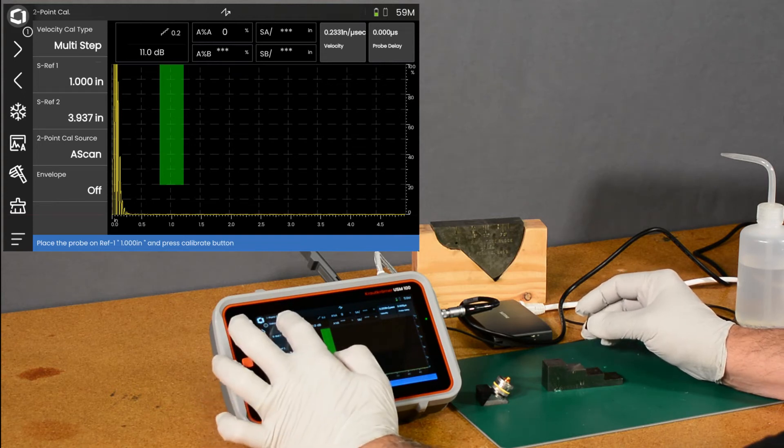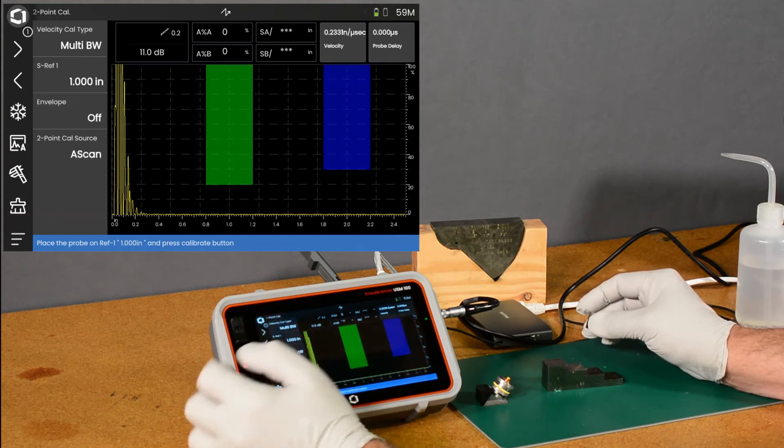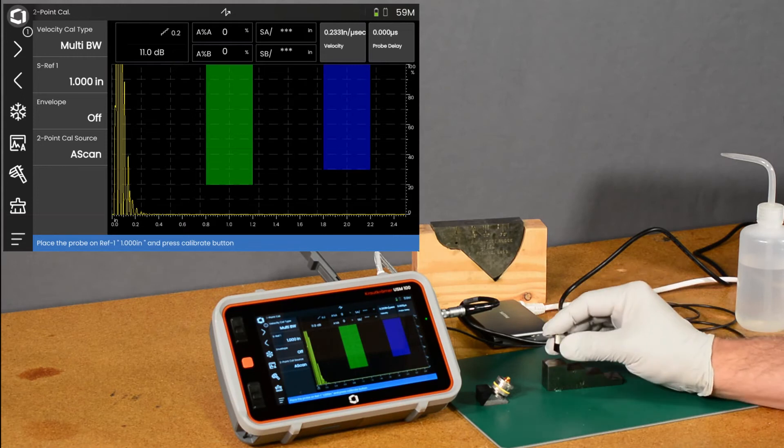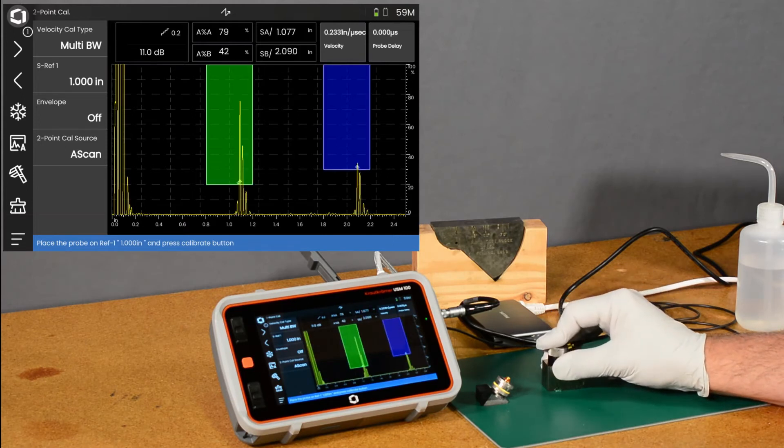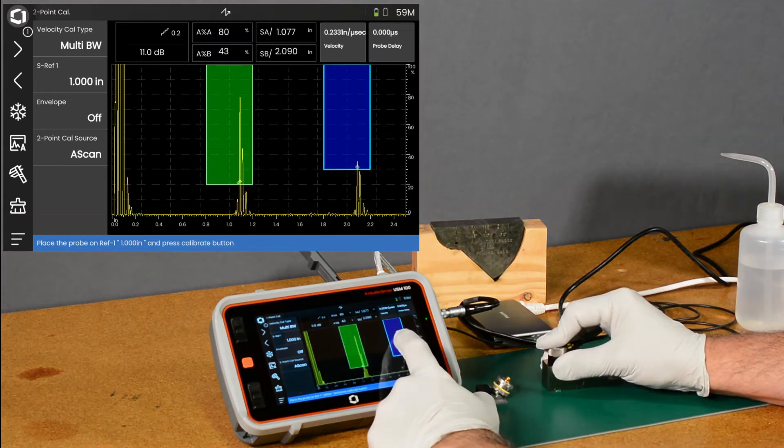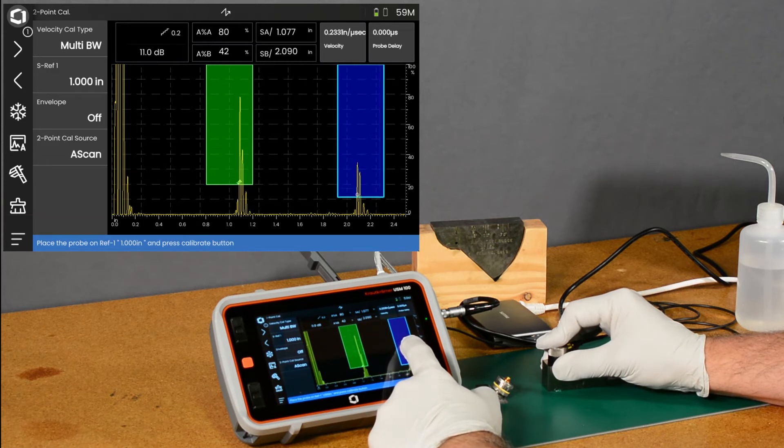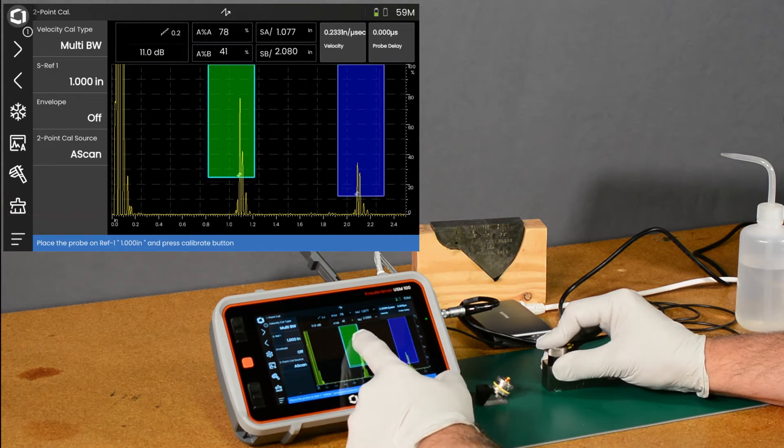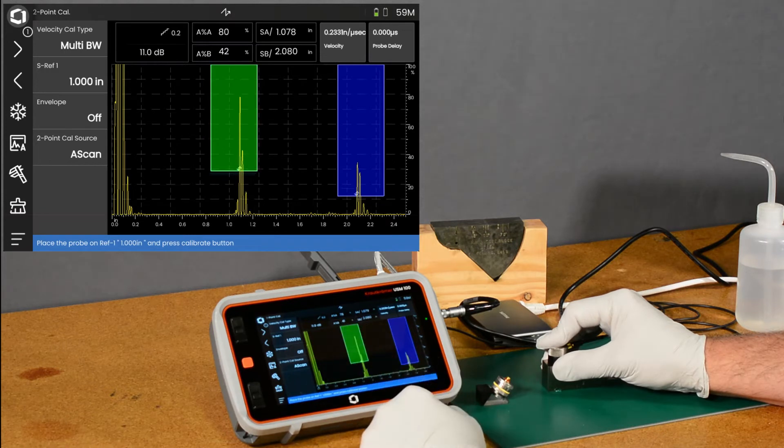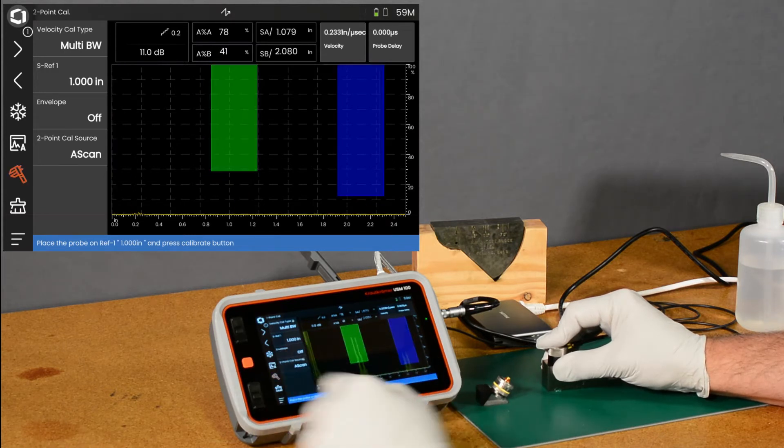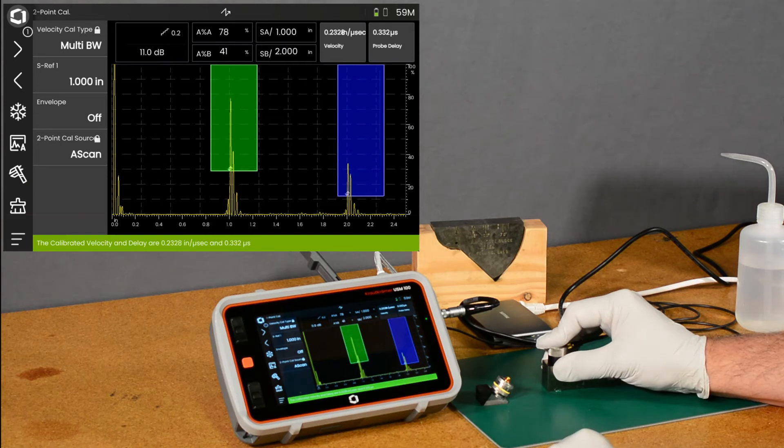And I'm going to make use of our multi-backwall calibration. So this allows us to do the calibration in one quick step. I'm going to drag my gate B here so it's about the same place on the flank as gate A. And all I need to do is hit the calibrate button,